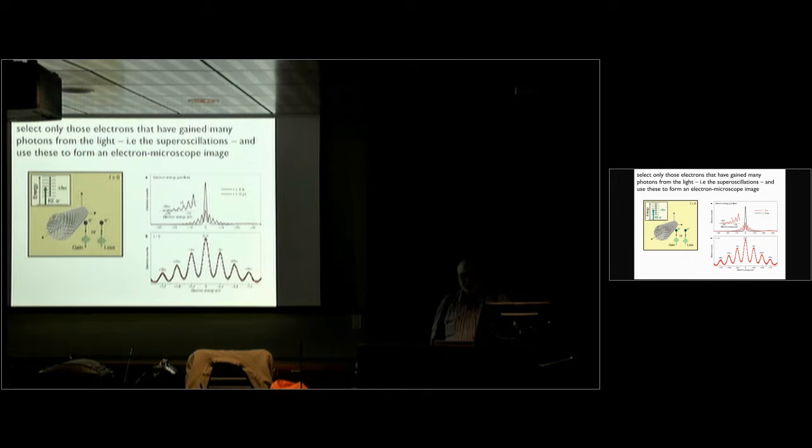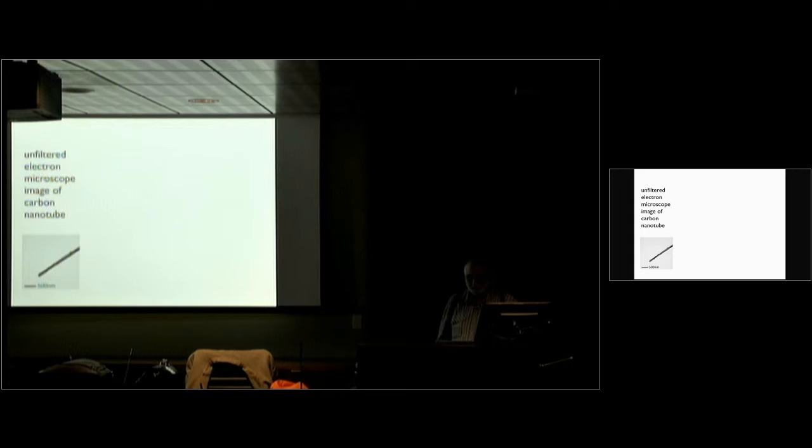So here's the electron energy gain or loss — gaining or losing a photon, as a function of energy. There are electrons that gain one photon, two, three, four, five. And you can select only the ones that gain a large number of photons. And when you do that, this is what you see. So this is an electron microscope image. This is the thing you're seeing, but you want to see it with light. And here's 500 nanometers.